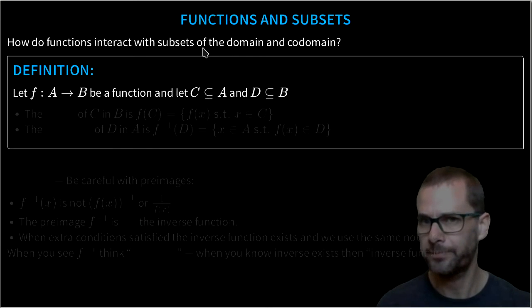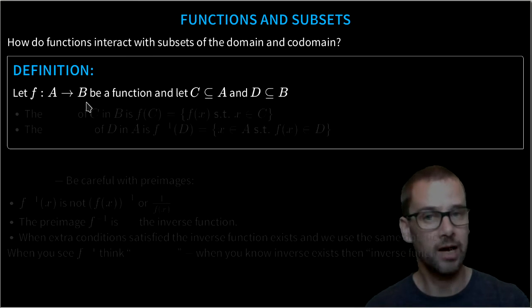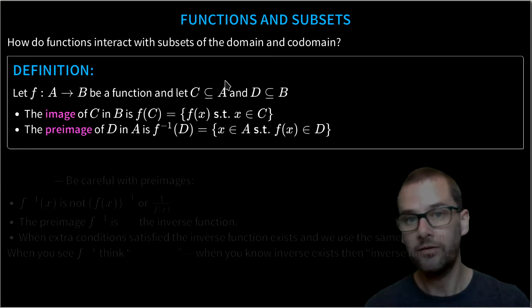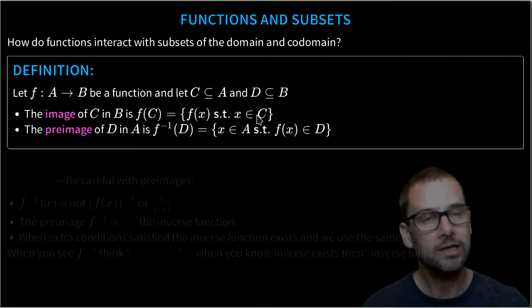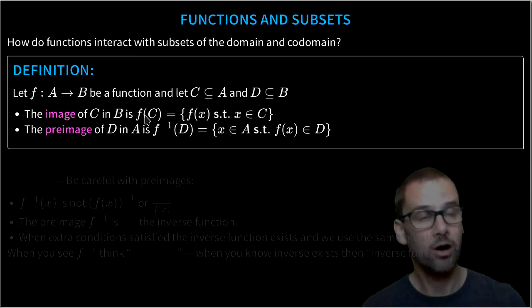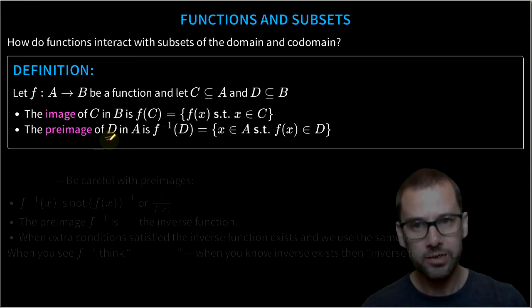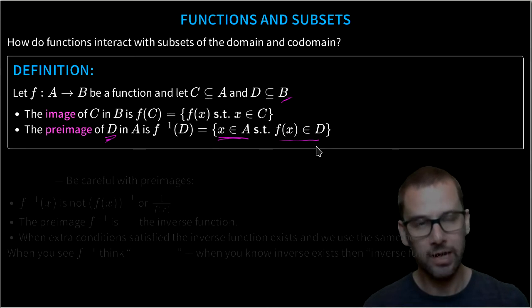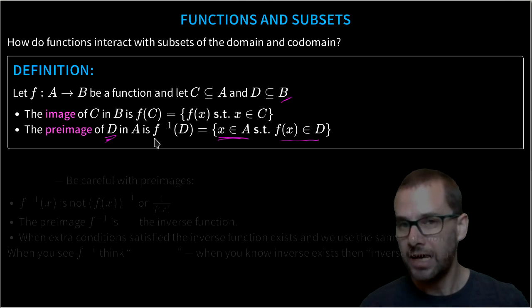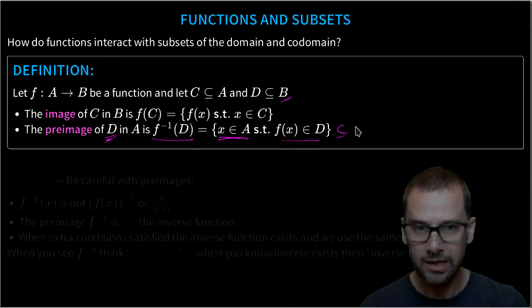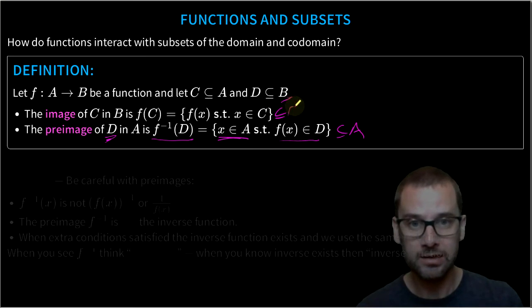Let's think about a function F from A to B, with a subset C of the domain and a subset D of the codomain. We define the image of the set C as basically the image of every single point in C. So F of C is the image of every point in C, giving us a subset of the codomain. The pre-image of a set D in the codomain is all the points in A that map into D. We denote this as F inverse of D, which is a subset of A, just as the image is a subset of B.